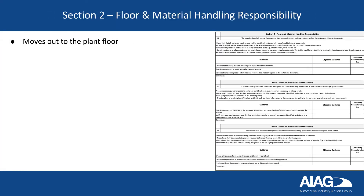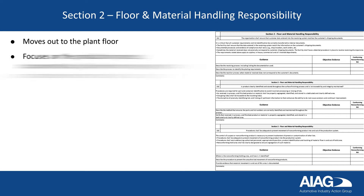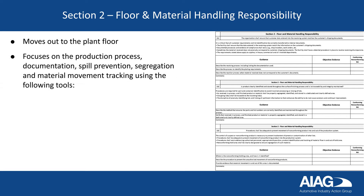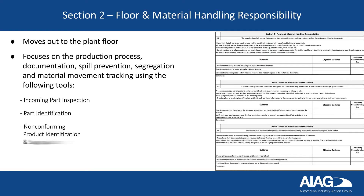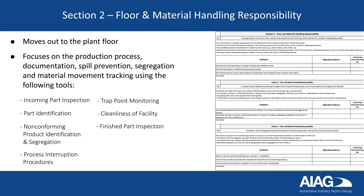Section 2 moves out to the plant floor. It focuses on the production process, documentation, spill prevention, segregation, and material movement tracking using the following tools: incoming part inspection, part identification, non-conforming product identification and segregation, process interruption procedures, trap point monitoring, cleanliness of the facility, and finished part inspection.